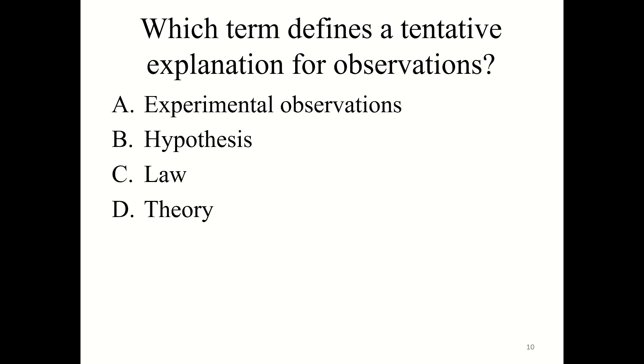Here is a knowledge check question. Which term defines a tentative explanation for observations? Okay, the correct answer is B, hypothesis. A hypothesis is a tentative explanation for observations.